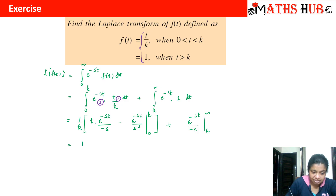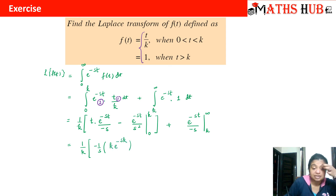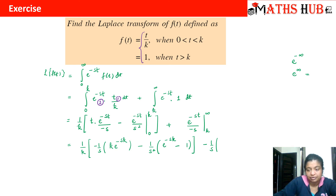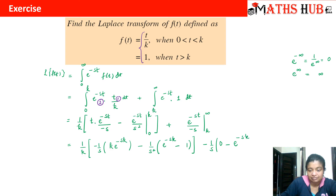Now substituting the limits: from the first term, taking out -1/s common, the upper limit gives k·e^(-sk) and the lower limit gives 0. The second term gives -1/s² times (e^(-sk) - 1). For the last term, taking out -1/s common: the upper limit gives e^(-∞) which equals 0, since e raised to power minus infinity equals 1/e^∞ which is approximately 0. The lower limit gives e^(-sk).